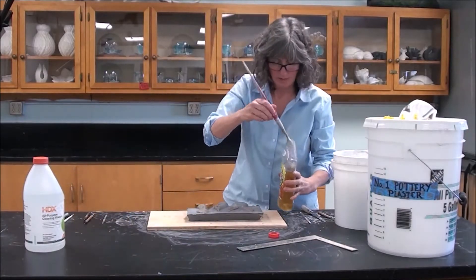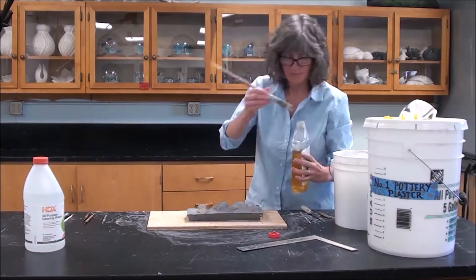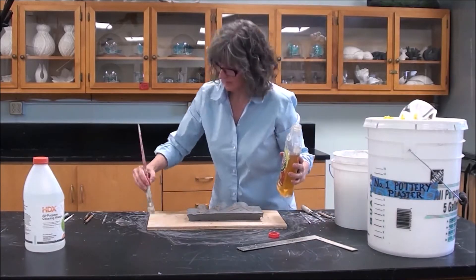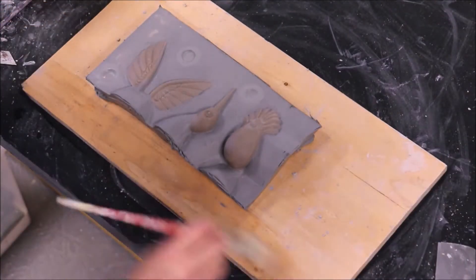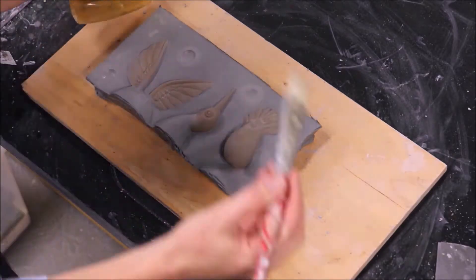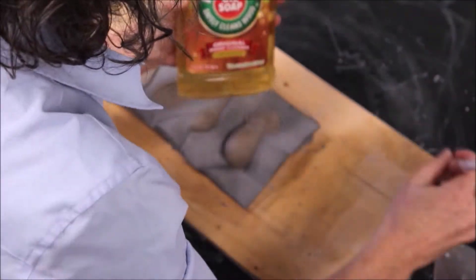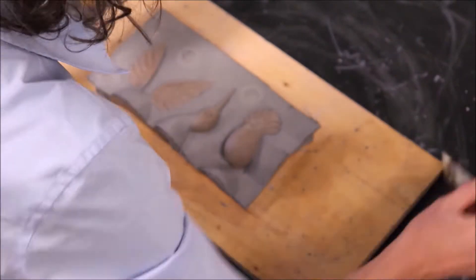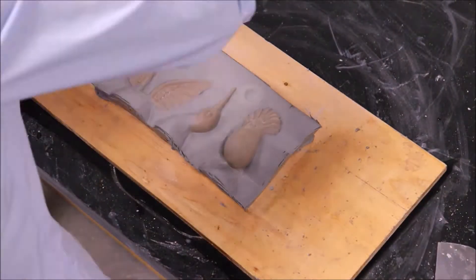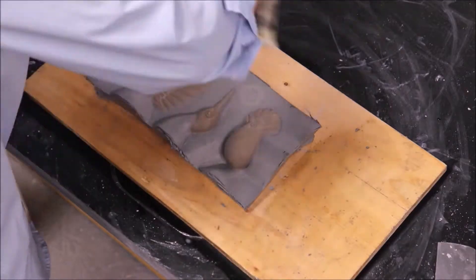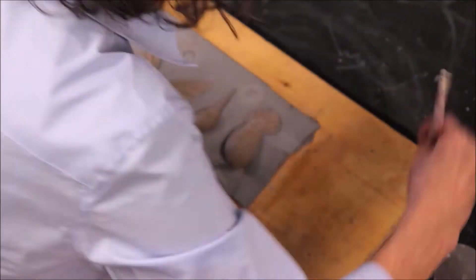All right, now that I've finished preparing the clay bed, it's time to actually make the mold. Since I created this mold on top of a wooden board, I am giving it a nice generous coat of Murphy Oil Soap so that in case I accidentally spill some plaster onto this wooden board, it will release nice and easily.